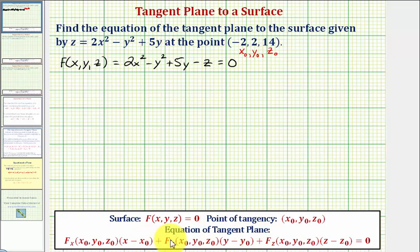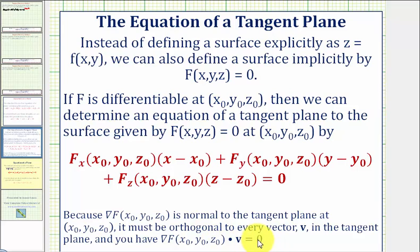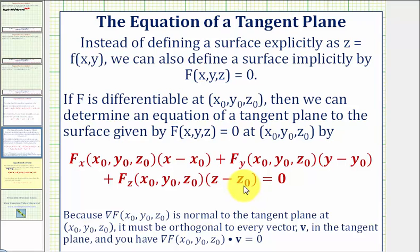Let's quickly review where the equation of this tangent plane comes from. We know the gradient of F evaluated at the point of tangency would be normal to the tangent plane at the point of tangency, which means it must be orthogonal to every vector V in the tangent plane, and therefore their dot product equals zero. It's this dot product that gives us the equation of the tangent plane. Notice how the components of vector V, which are in the tangent plane, would be x minus x-sub-zero, y minus y-sub-zero, and z minus z-sub-zero.